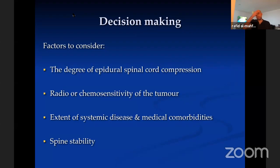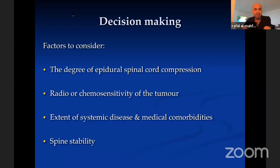For decision-making, keeping in mind the aims of treatment, there are four important points to consider. First, the degree of cord compression — the epidural spinal cord compression — which reflects on neurological compromise and preserved neurological function. Second, the nature of the tumor: is it radio- or chemo-sensitive? Third, the extent of systemic disease and medical comorbidities. Fourth, spinal stability. If we have answers to these four points, we'll be able to come up with a management plan.